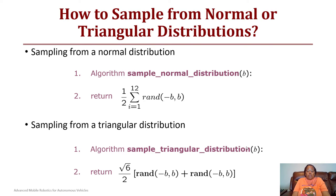There are two algorithms for doing this. Sometimes it's easier to use the triangular distribution than the normal or Gaussian distribution. For the sample normal distribution, you would send in a value b, then return one half the summation from i equals 1 to 12 of a random number between negative b and b. For the triangular distribution, you would have sample_triangular_distribution b.